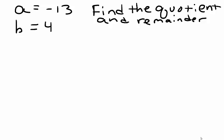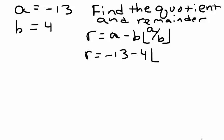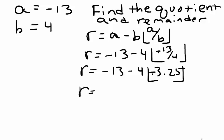Writing the division algorithm formula to solve for R again gives us R equals A minus B times the floor of the ratio A over B. So R is equal to negative 13 minus 4 times the floor of negative 13 over 4. R equals negative 13 minus 4 times the floor of approximately negative 3.25. The floor of negative 3.25 is negative 4.